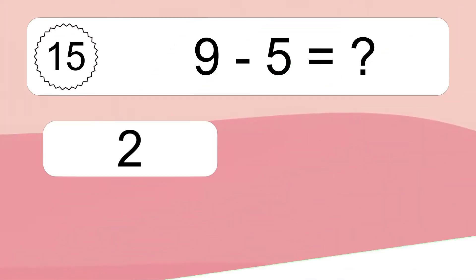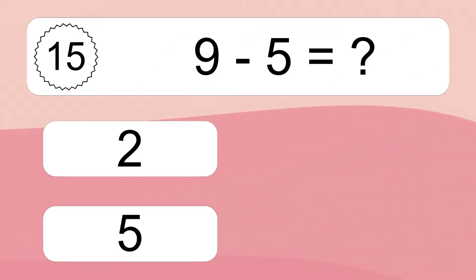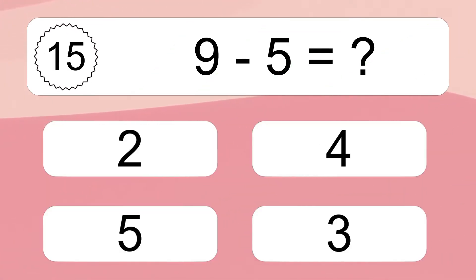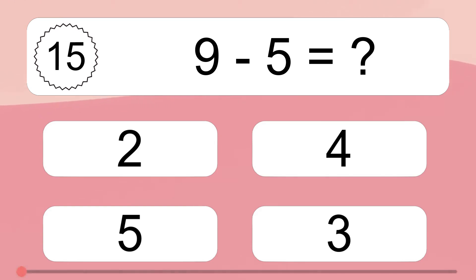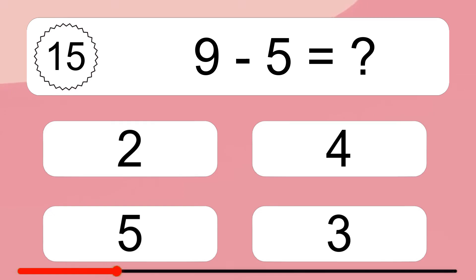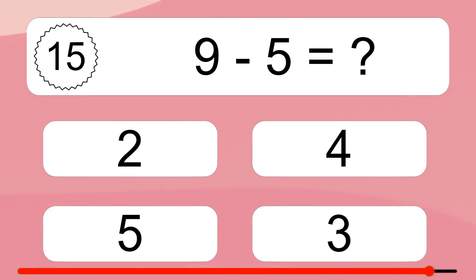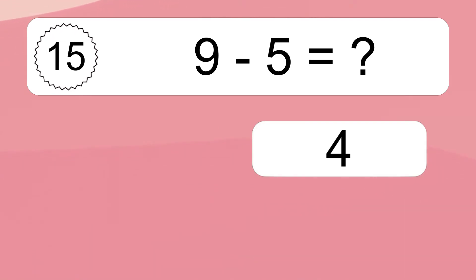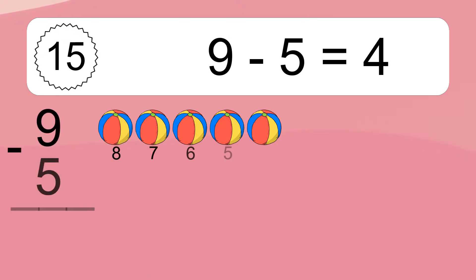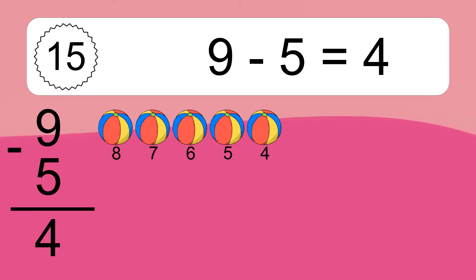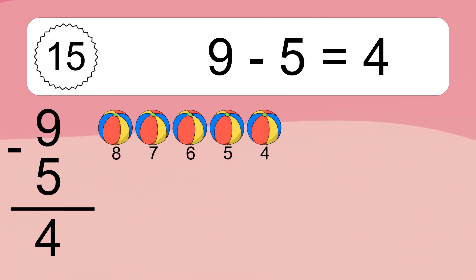9 minus 5 equals what? 9 minus 5 equals 4. Let's count it: 8, 7, 6, 5, 4.